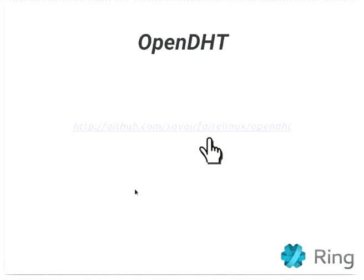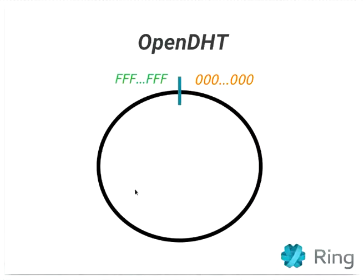Let me show you the process behind the distributed hash table. We start with a circle representing the key space. Every key and every ID — which is the same thing — will be placed on this circle. When Alice wants to use the distributed hash table, she first has to know one node. Once she knows that first node, she asks it: what is the list of nodes closest to the ID I'm looking for? The ID Alice is looking for is represented by the mailbox on screen.